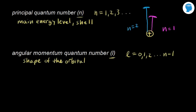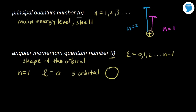For example, for n equal to one, the first shell, there's only one possible value for l: n minus one equals zero. So l equals zero is the only allowed value. When l equals zero, we call this an s orbital. The shape of an s orbital is a sphere — a three-dimensional volume. So the electron is most likely to be found somewhere in that sphere.